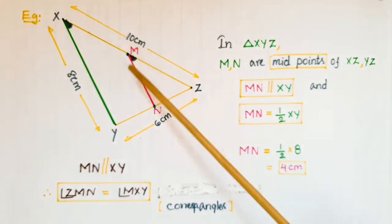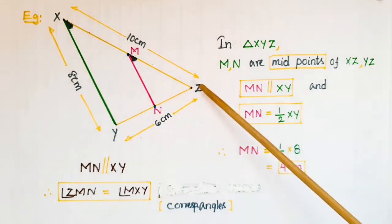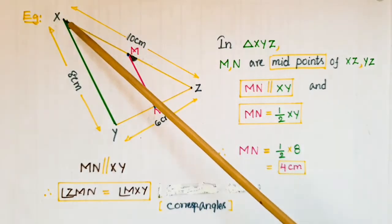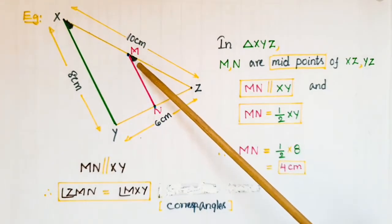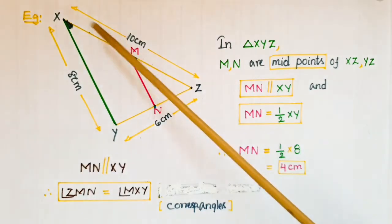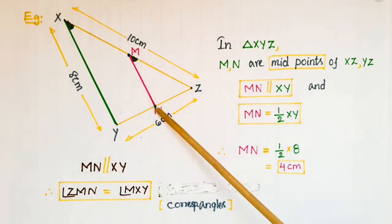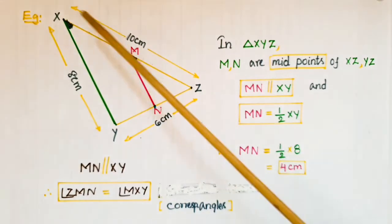We know that MN is parallel to XY. If you observe, XZ is a transversal line and these two angles are corresponding angles. We know that if a transversal line intersects two parallel lines, then the corresponding angles are equal. So here, angle ZMN equals angle MXY.